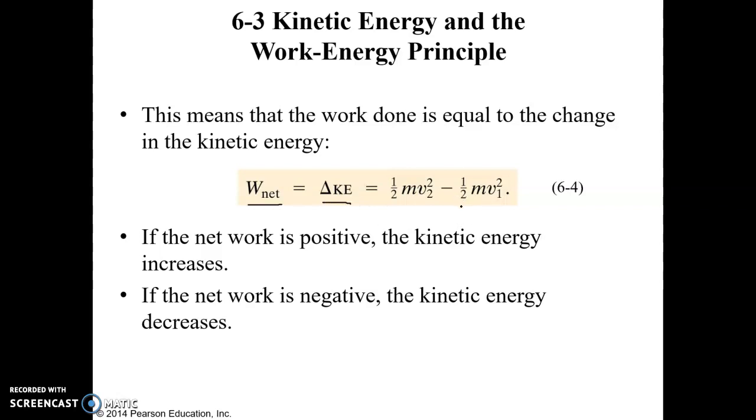So if we have one half mv1 squared, which is the amount of energy that we have to start with, and one half mv2 squared, and that's the kinetic energy that we end with, if we look at the difference in kinetic energy between the starting point and the ending point, that tells us how much our energy level changed, which is equivalent to how much work was being done.